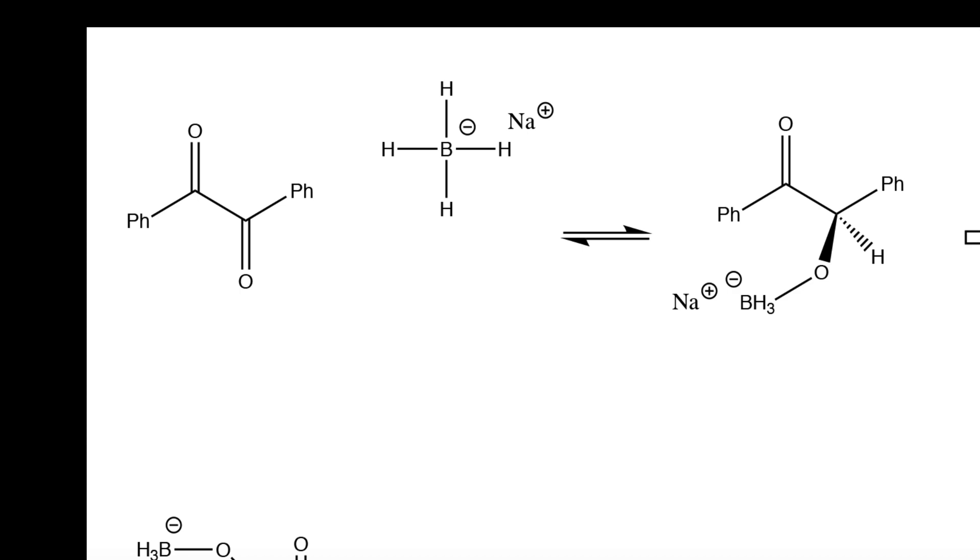The first part of the reduction involves this hydride attacking one of the carbonyls. At this moment, when the reduction occurs, the hydride is not selective for any of these carbonyl carbons. So it could attack this carbonyl or this carbonyl.